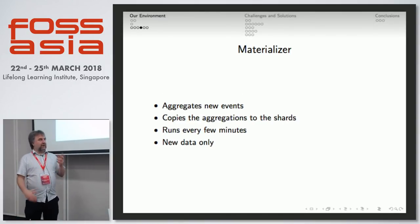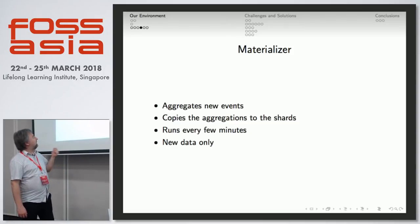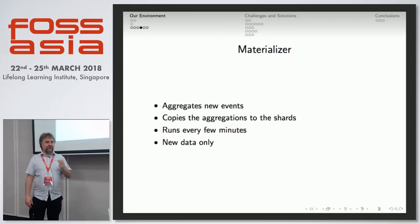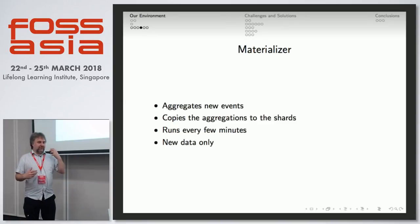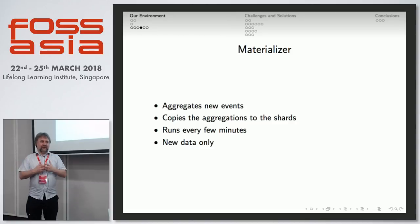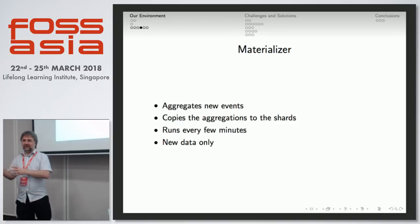Let's talk quickly about this materializer process written in PLPGSQL. It aggregates new events, copies them to the shards, runs every few minutes, and runs on new data only. So this is an incremental MapReduce job — it runs in Postgres, grabs new records only, digests them down, and sends out basically the diffs to these other servers, which then store the little pieces. Right now it does this via the foreign data wrapper, though we are changing that because the foreign data wrapper has some serious performance limitations.